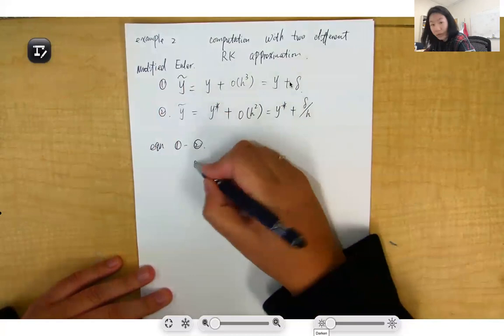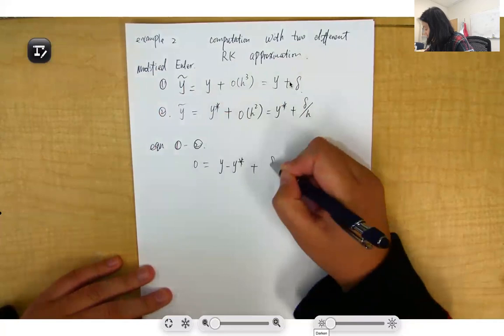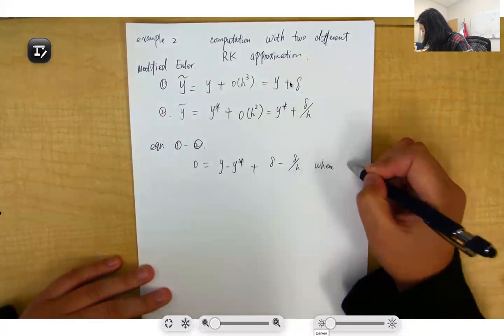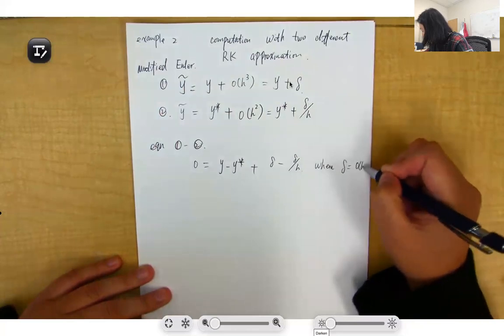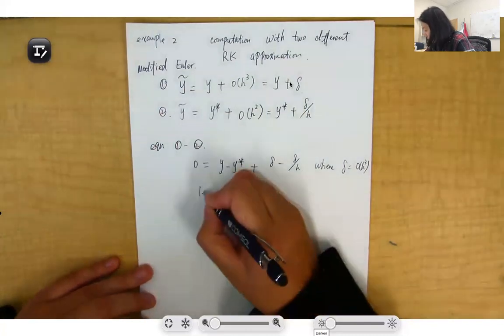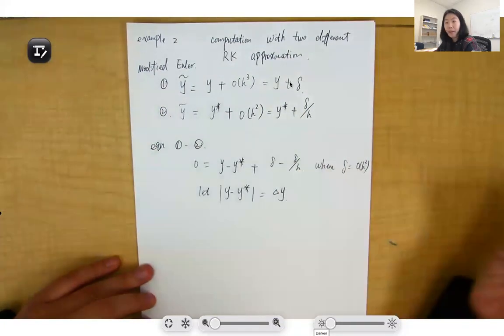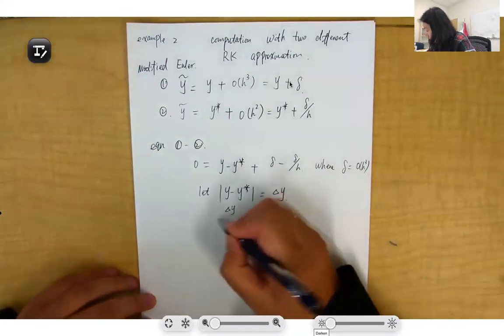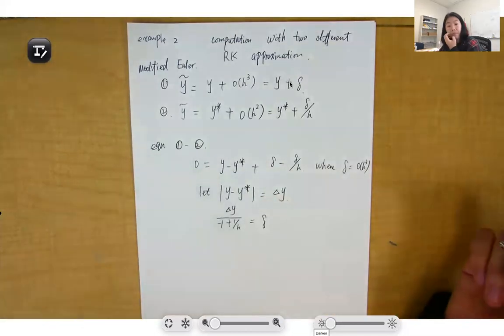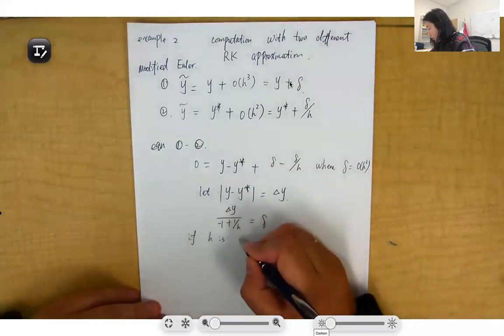What you get is 0 = y - y* + σ - σ/h, where σ is O(h^3). What you can get is 0 = Δy/(-1 + 1/h).